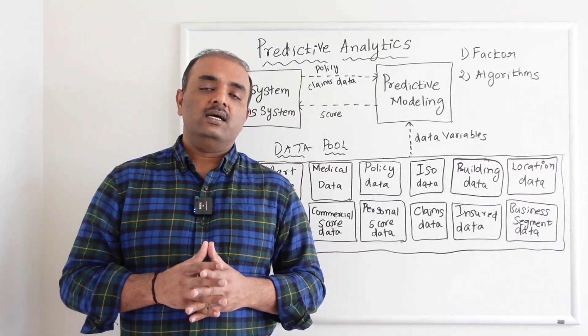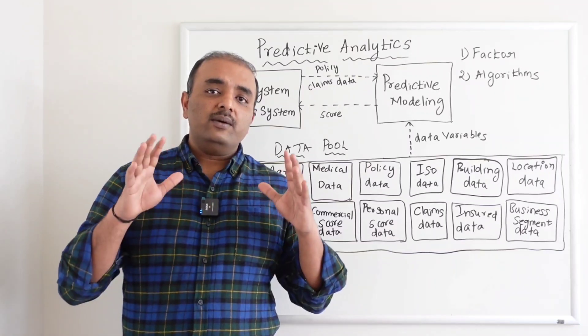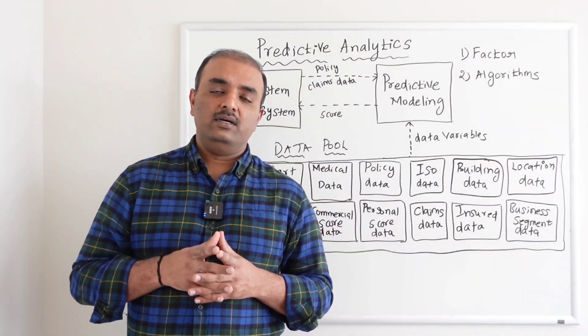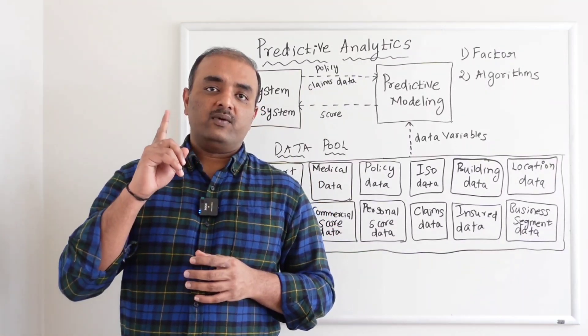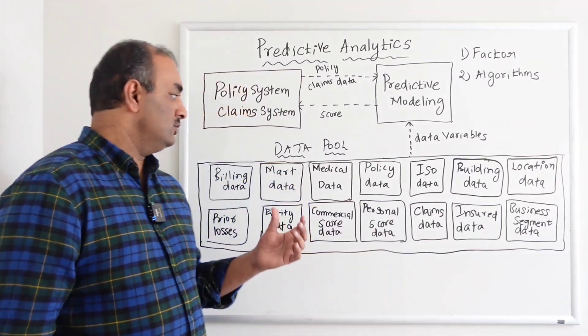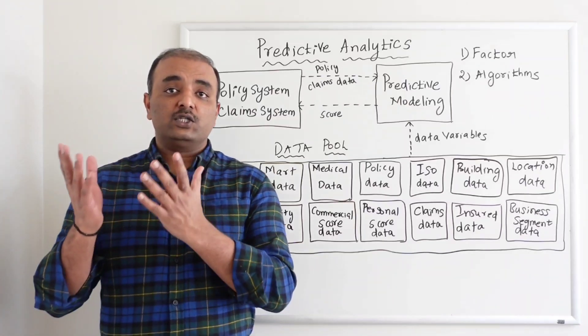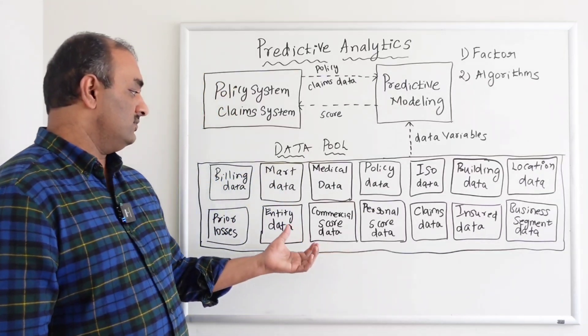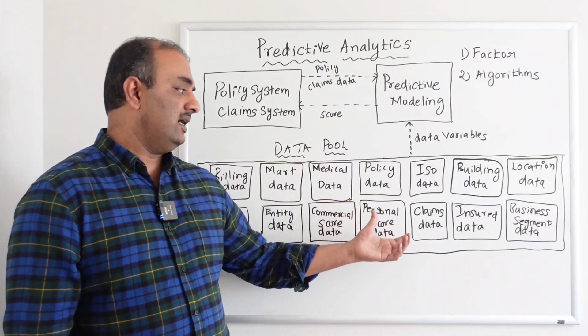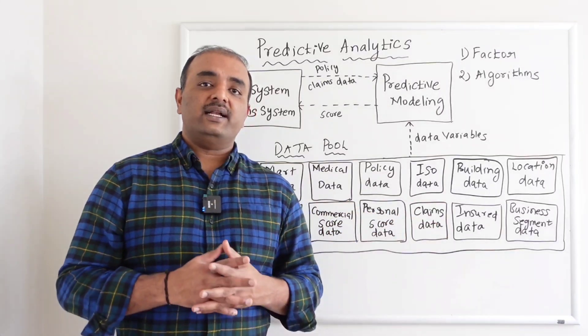What insurance companies do is they do not rely on one algorithm. Instead, they do have multiple algorithms. Like, say, example - if they have algorithm number one with model one, they use data variables from billing. They could have a model two which will use algorithms from entity data, claims data, entry data.